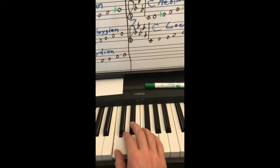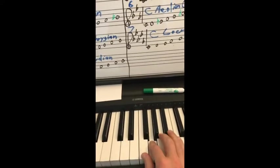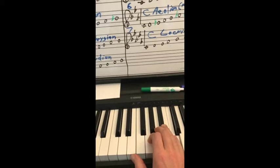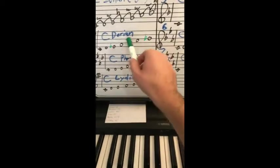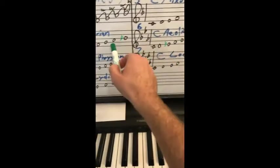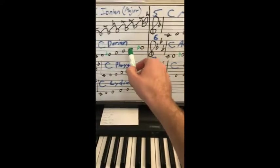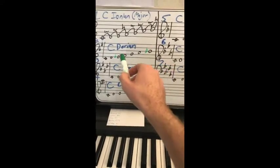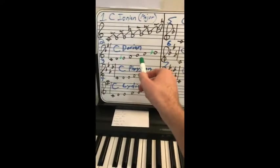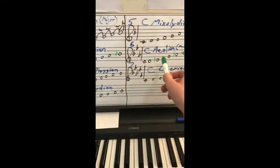Play it. So, notice the difference between Dorian and Aeolian is this one note. Instead of a flatted six here, it's a major six here. So, Dorian, people think of it like, it's like the minor, but with a major six. It's not quite as dark sounding.